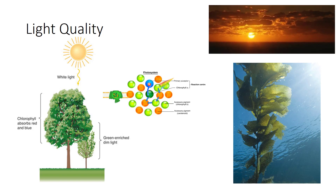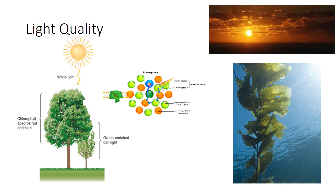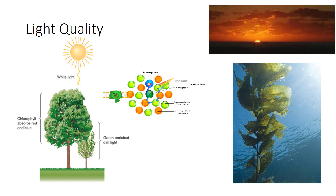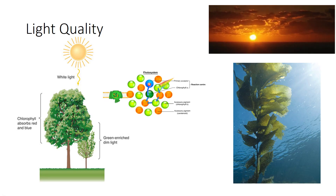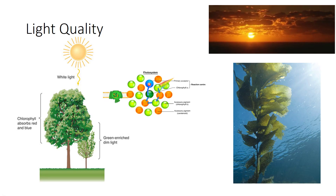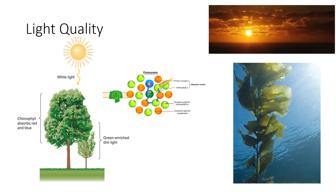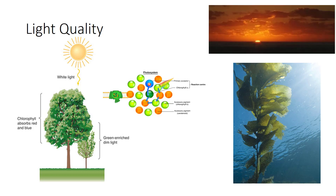Quality of sunlight refers to the colors or wavelengths it contains. Sunlight is pure white because it contains the entire visible spectrum. During sunset and sunrise, sunlight passes through the atmosphere and a large percentage of the blue light is deflected upward. Consequently, light at ground level is enriched in red, which is easily visible. This period of red-enriched light lasts only a few minutes and has little effect on photosynthesis.